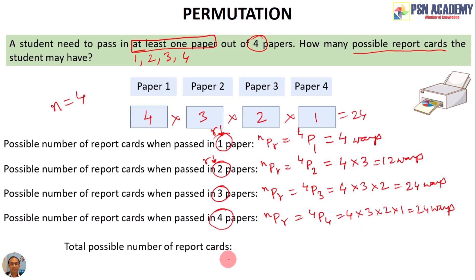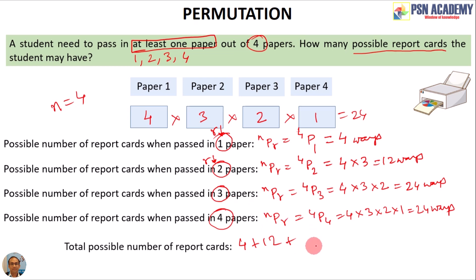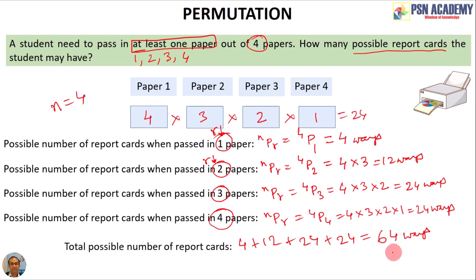Summing all cases: 4 ways (one paper) + 12 ways (two papers) + 24 ways (three papers) + 24 ways (four papers) = 4 + 12 + 24 + 24 = 64. So the total possible number of report cards is 64.